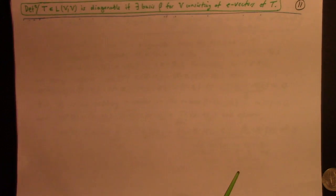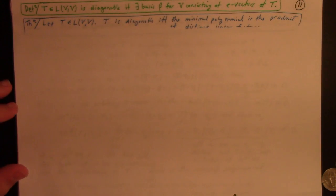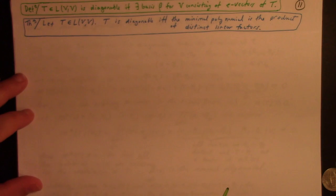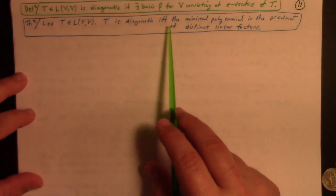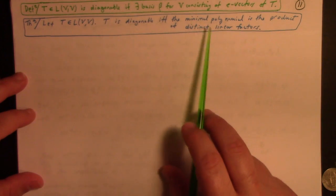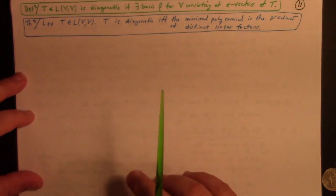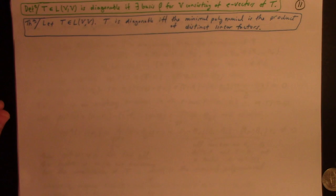All right, now, theorem. If you have a linear transformation from V to V, T is diagonalizable if and only if the minimal polynomial is the product of distinct linear factors. All right, so here's the proof.